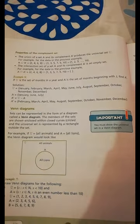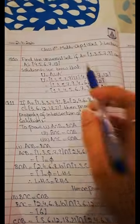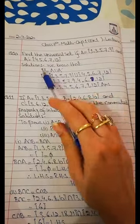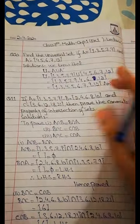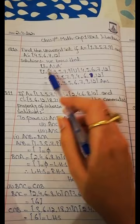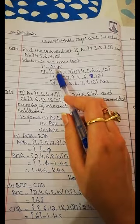So if I have A set and its complement given, and I have to find the universal set, I use question number 10. The solution: we know that the universal set is equal to A union A complement.